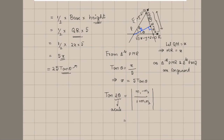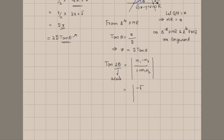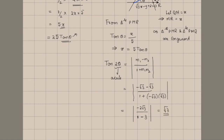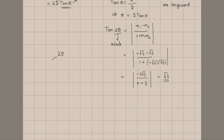The slope of the first line is −√3 and the slope of the second line is √3. So tan(2θ) = |−√3 − √3| / (1 + (−√3)(√3)) = |−2√3| / (1 − 3) = 2√3 / 2 = √3. Since tan 60° = √3, the acute angle 2θ = 60°, so θ = 30°. The obtuse angle would be 120°, giving θ = 60°.